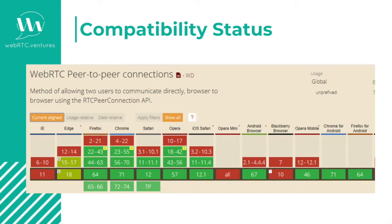Despite its wide adoption, there are still issues even in compatible browsers. This is because each browser implements things differently. Fortunately, there is a magic word that will surely help you to overcome those issues — that is Adapter.js. Adapter.js is a library that encapsulates all these implementation mismatches and makes it easier to work with WebRTC across browsers.